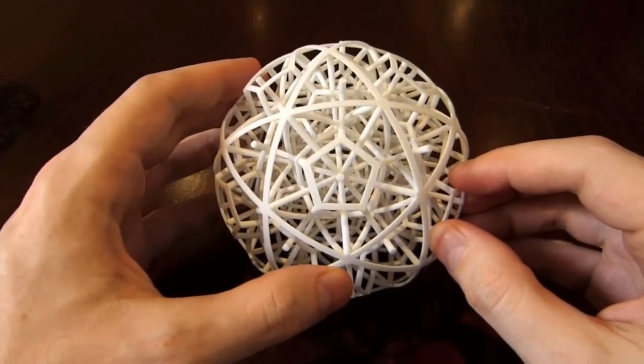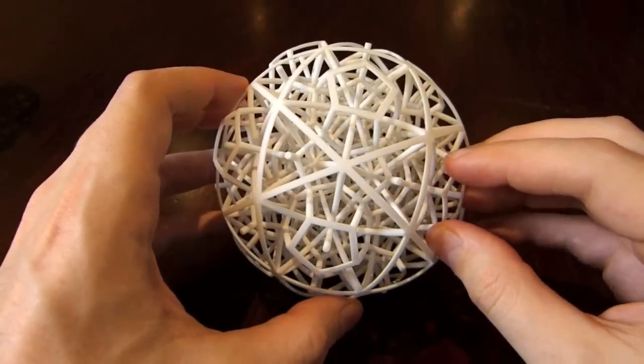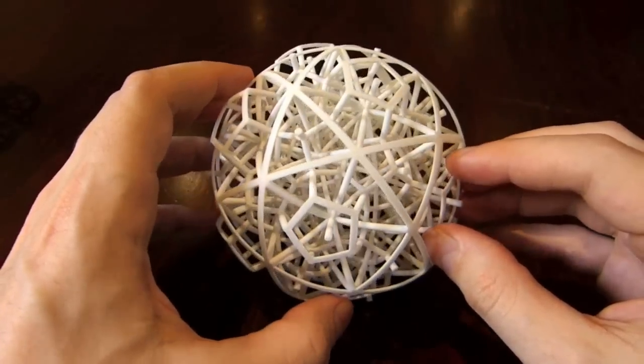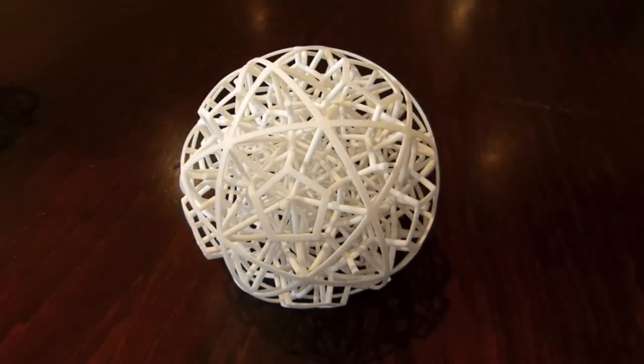So the five-fold symmetry here, and the three-fold symmetry is here, and the two-fold symmetry is there. This is dual half 120 and 600 cells.